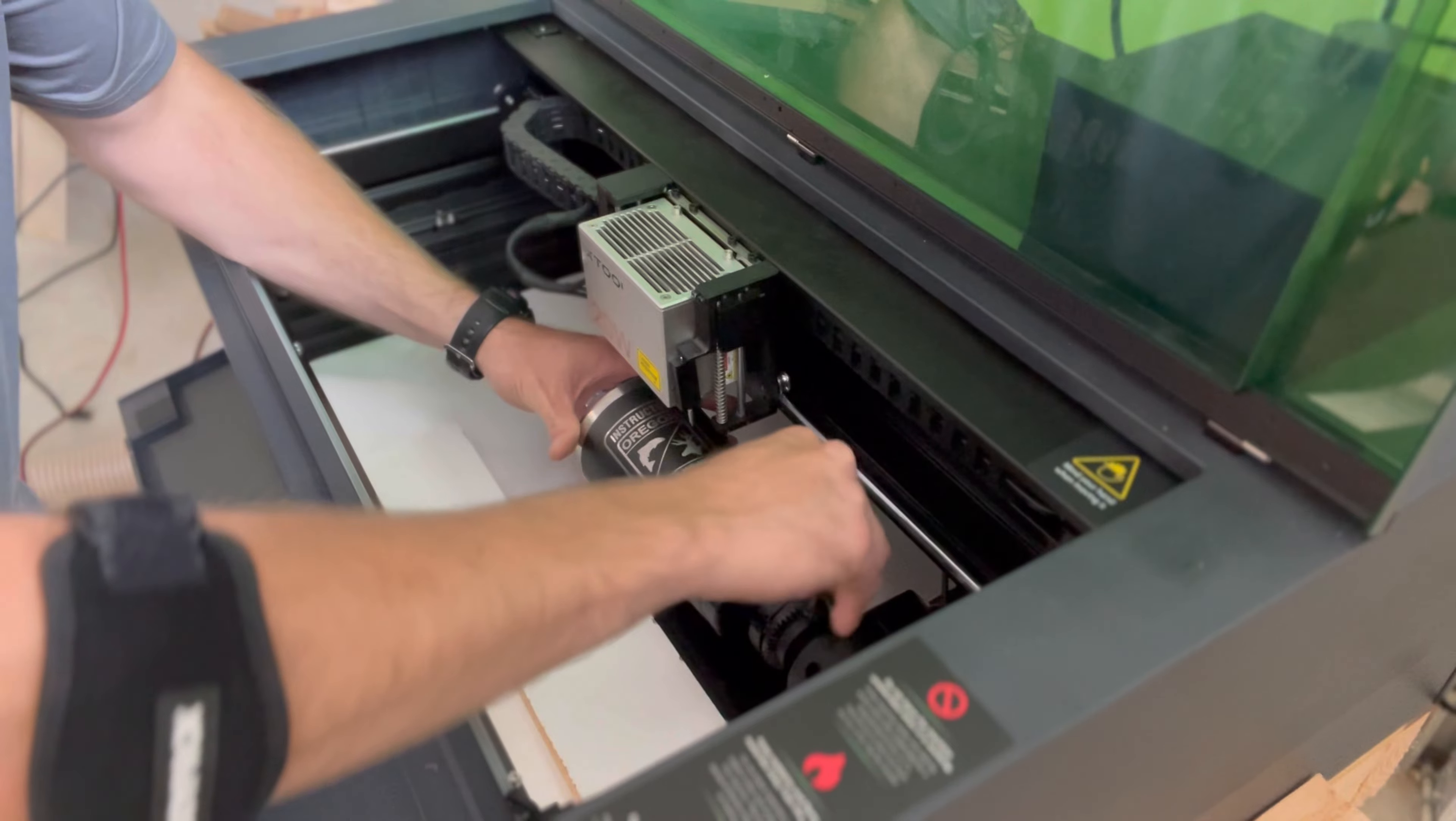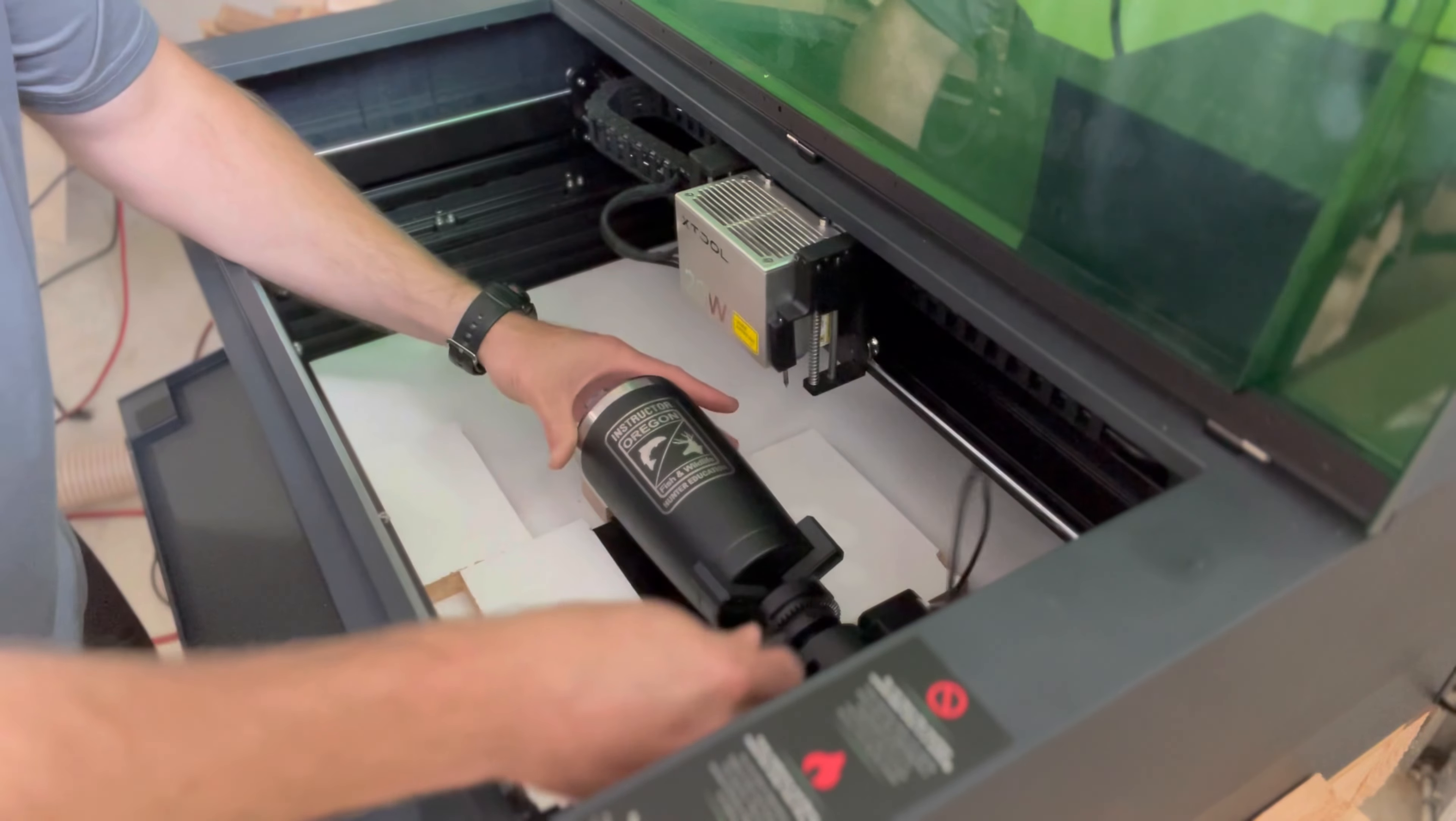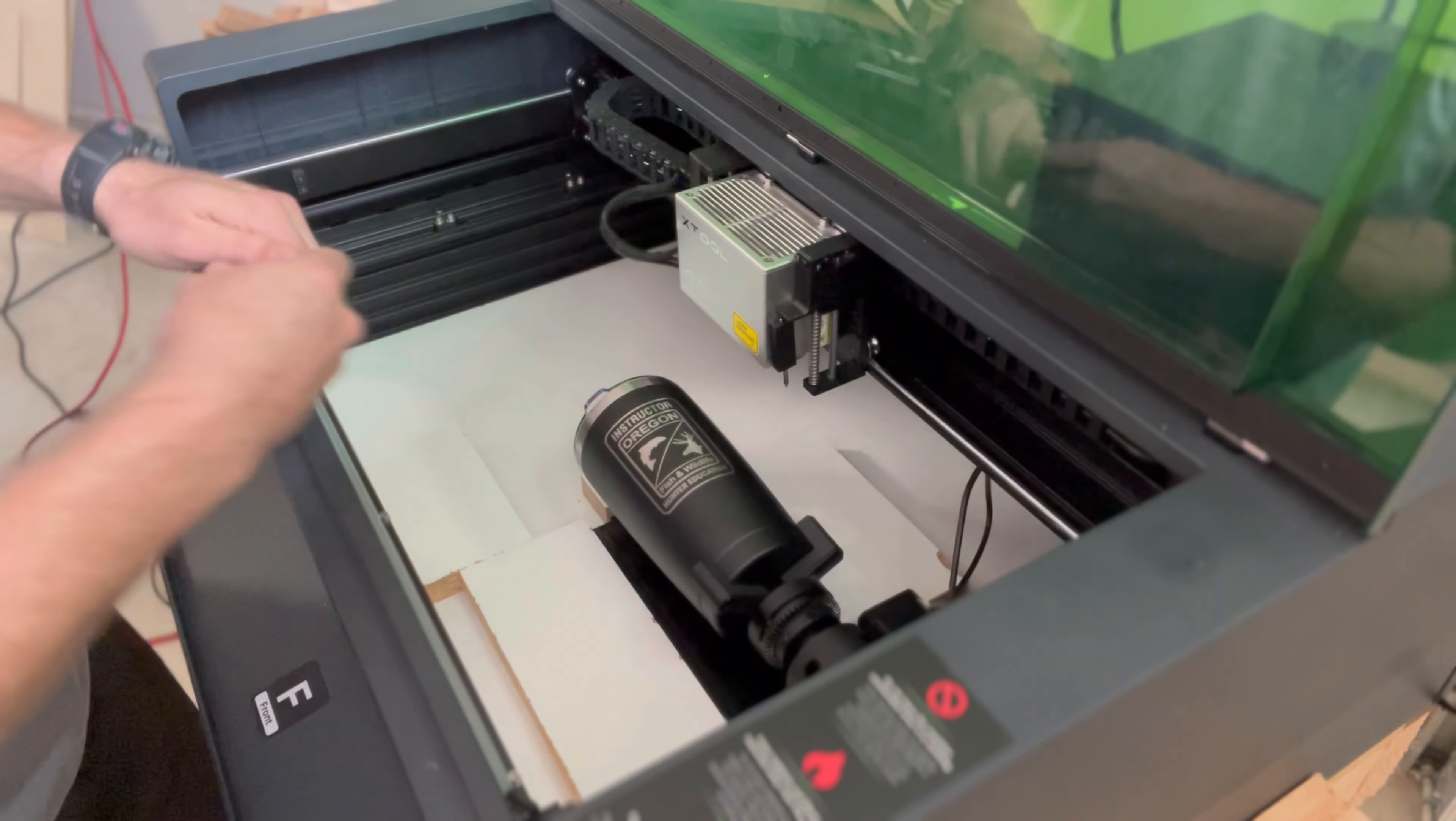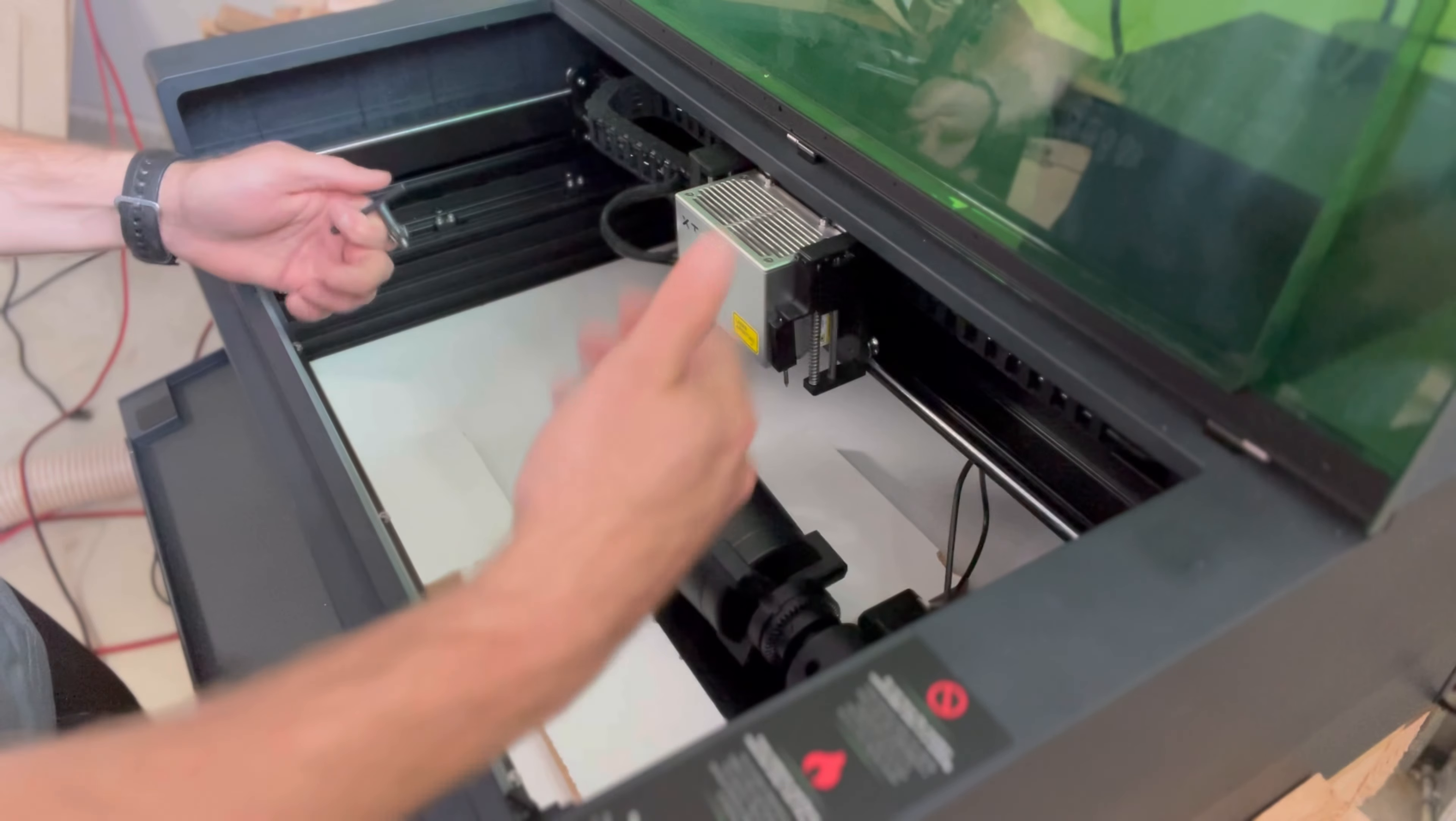Put my tumbler in here. Tighten with the key. Push that out of the way. You want to spin it and make sure there's no wobble. Make sure it's perfectly level.